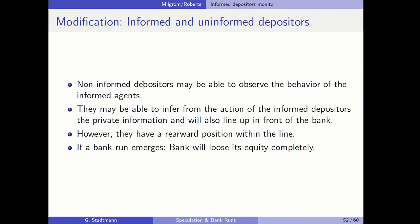Informed depositors have, due to the sequential move-out rule, an incentive to pull out their deposits as soon as possible, and they will not bear any cost. Uninformed depositors, who have a rearward position in the queue in front of the bank, may lose some money. However, non-informed depositors may be able to observe the behavior of informed agents and infer their private information, causing them to also line up. This means that if some people queue up prematurely, an uninformed agent gets a signal that the bank invested in the insecure alternative and will also line up.